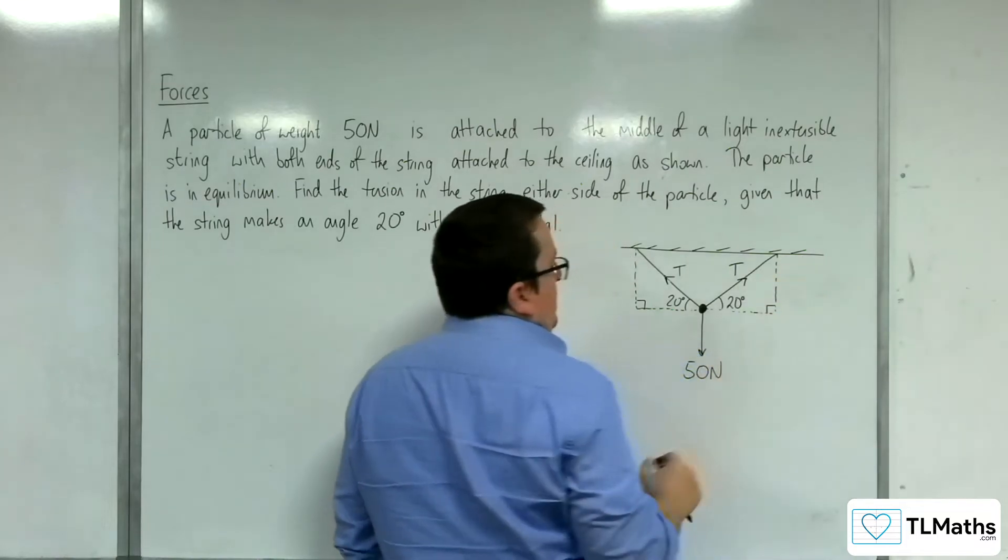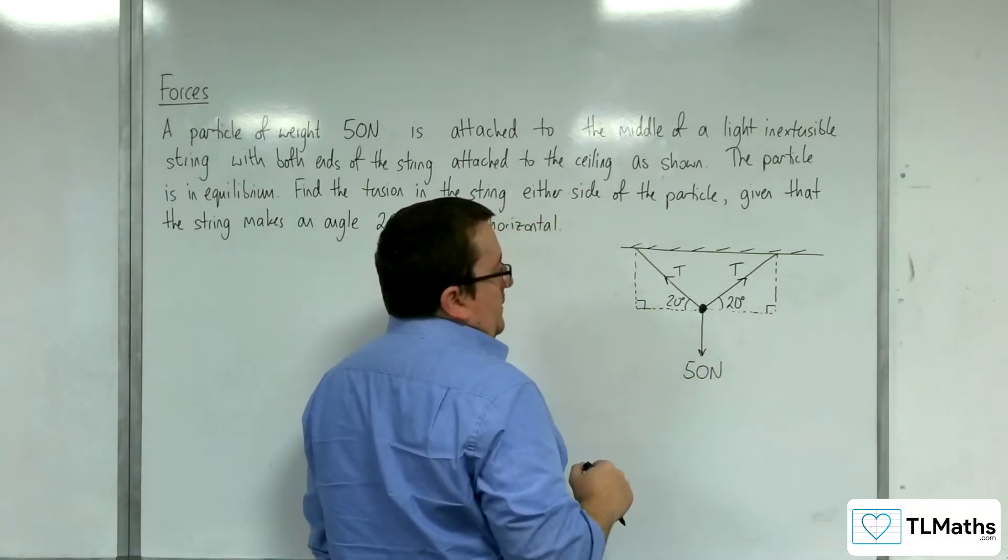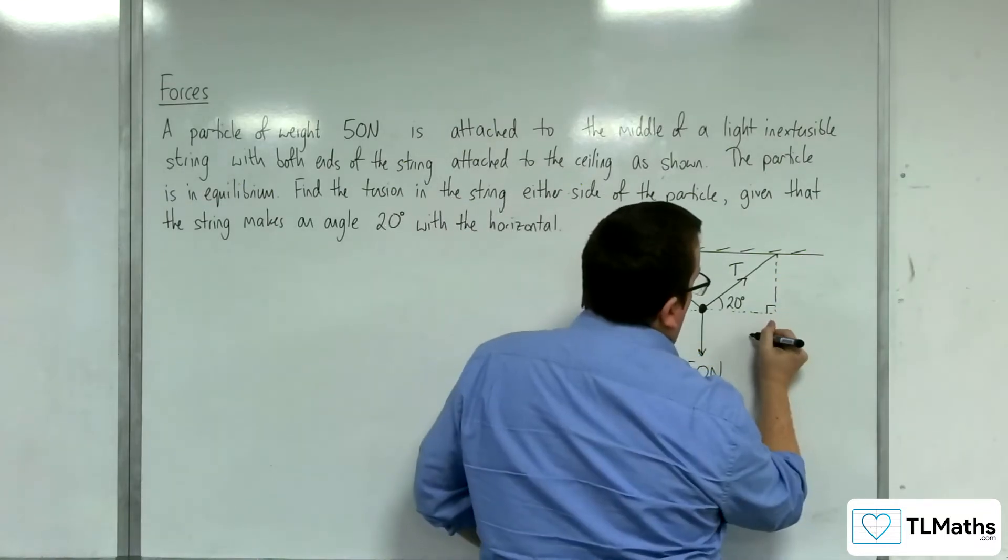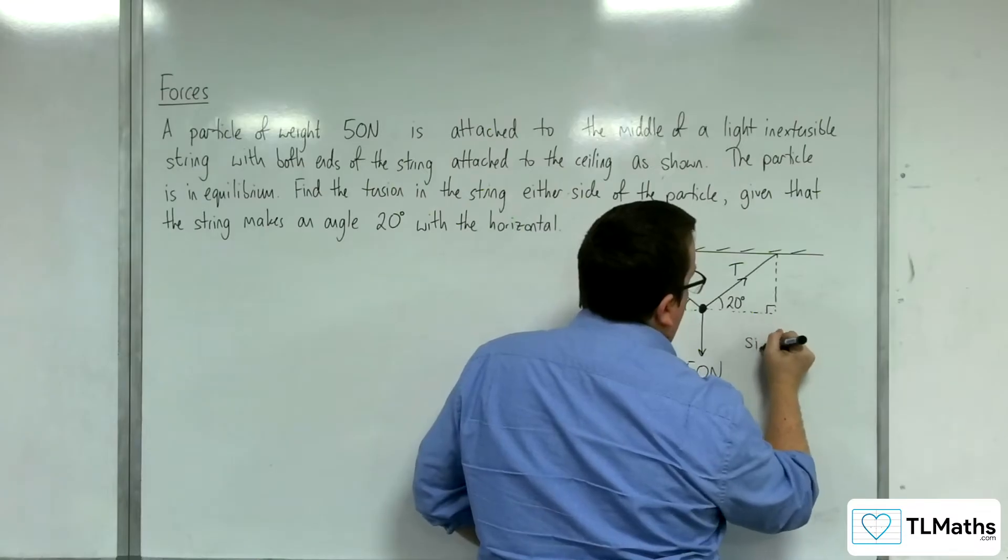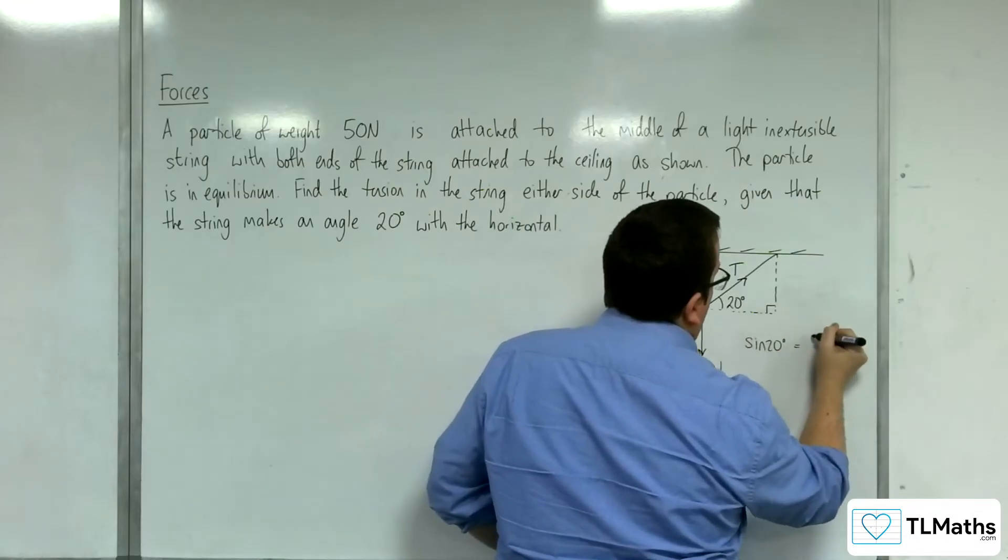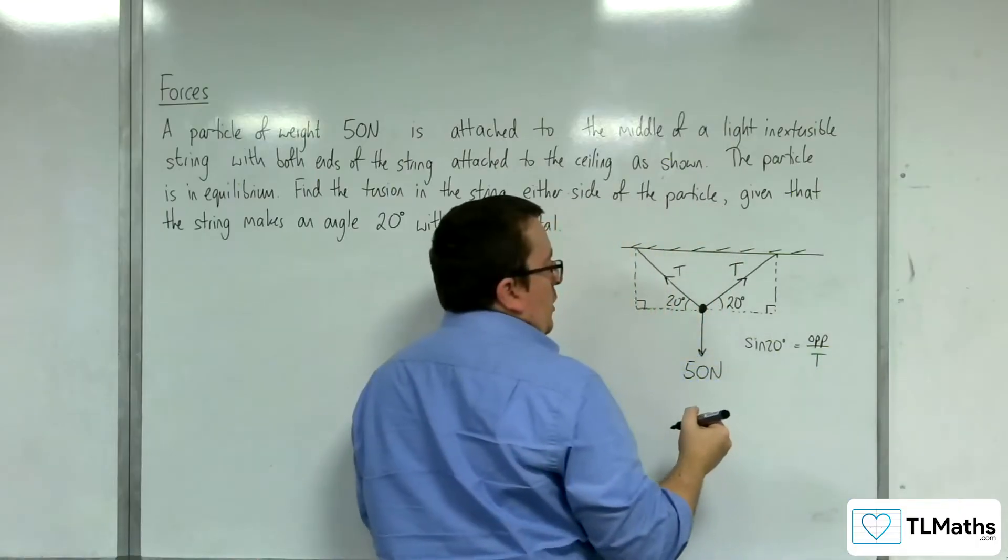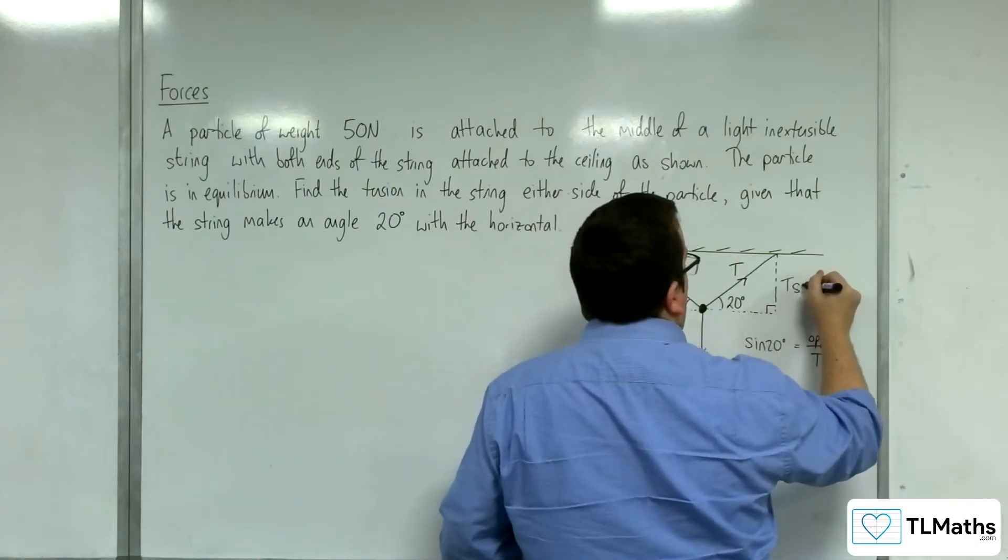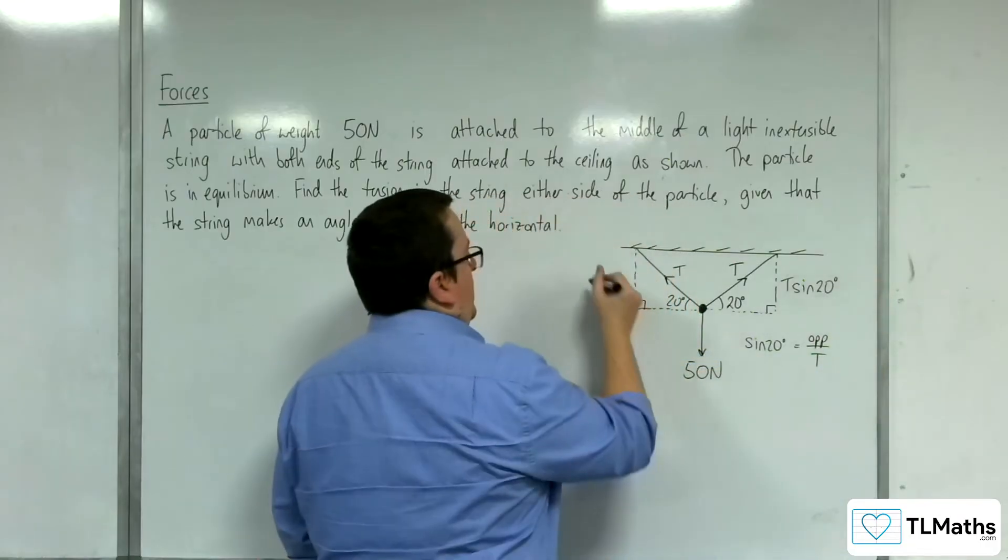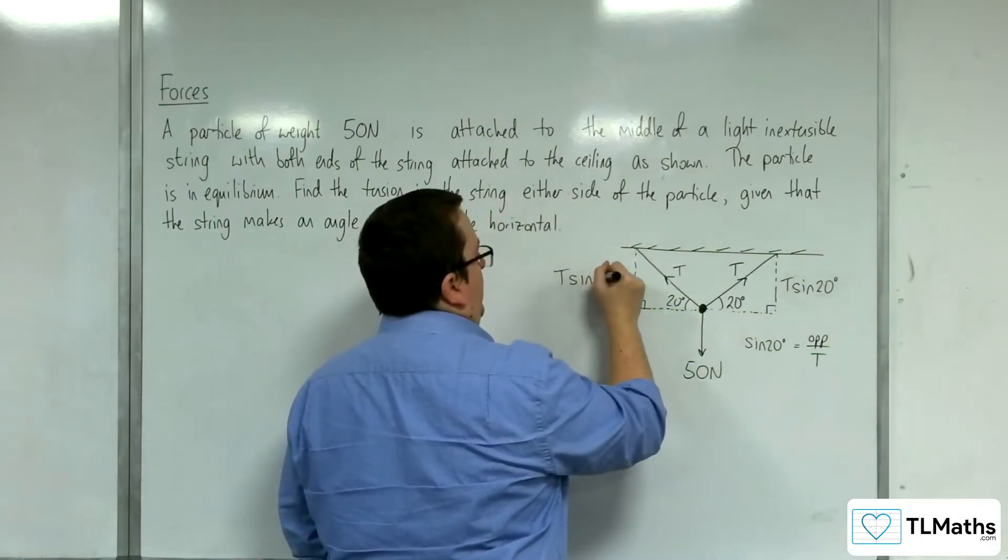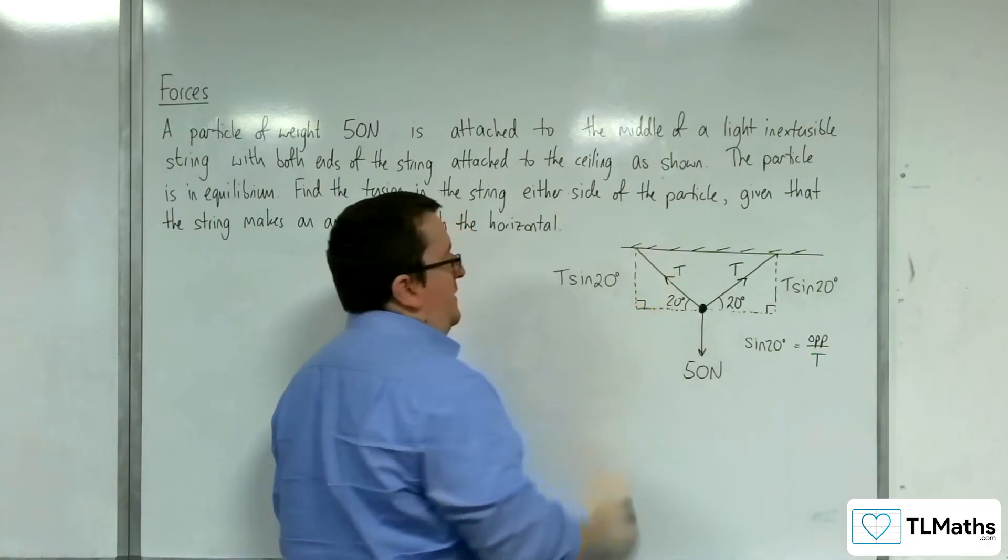The opposite side to my right angle triangle here - sine of the angle, sine of 20, must be equal to the opposite side divided by the hypotenuse. So, the opposite side must be T sine 20. And likewise, over here, the opposite side will be T sine 20.